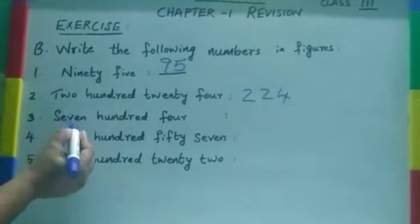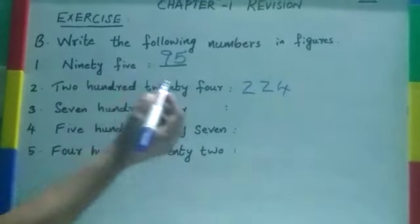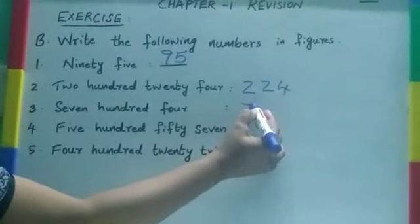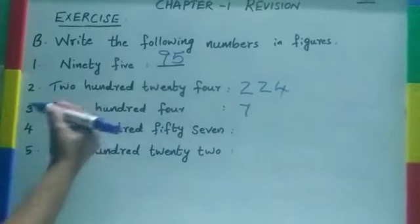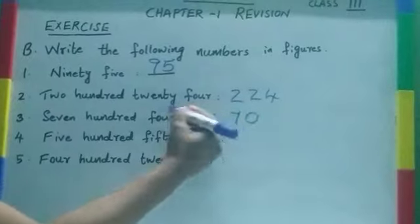Third one, 704. 704. There is no tens place. So what you have to do? You need to write here 0 and 4.